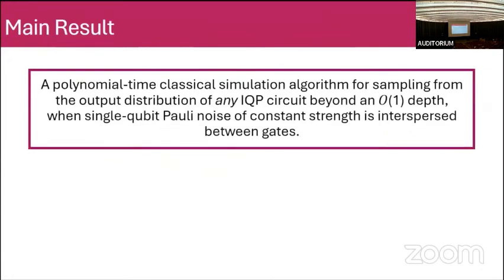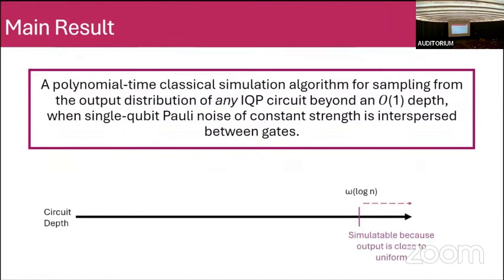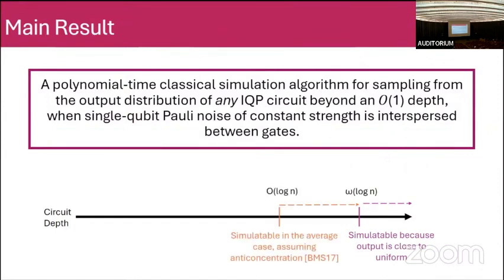The main result is a polynomial time classical simulation algorithm for sampling from the output distribution of any IQP circuit beyond an O(1) depth, with single-qubit polynoise channels of constant strength interspersed between gates. To place this in context: at depth above log n, your distribution with uncorrected noise becomes close to uniform — trivially classically simulatable. Our result shows that at constant depth and beyond, you already get classical simulatability, well below that log n threshold.